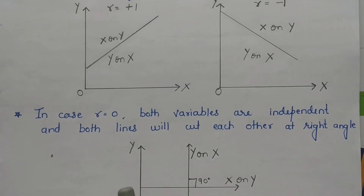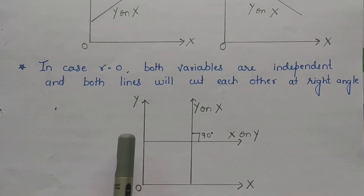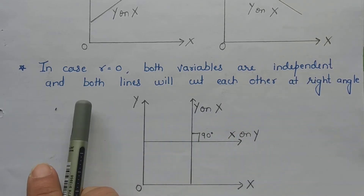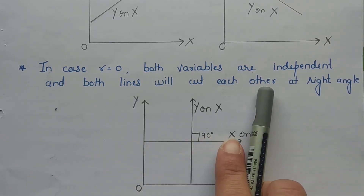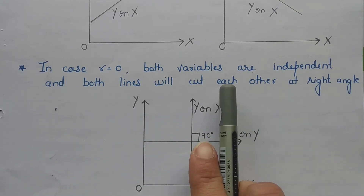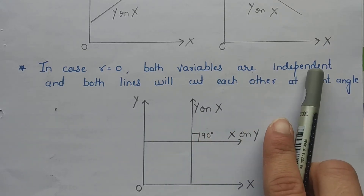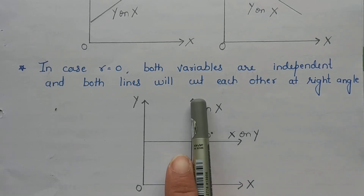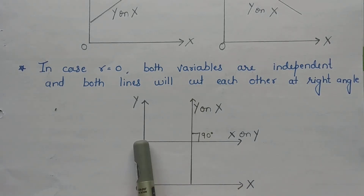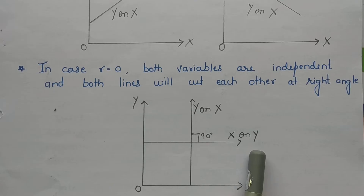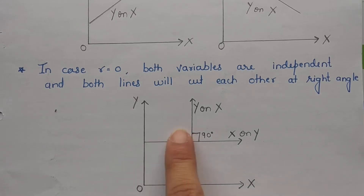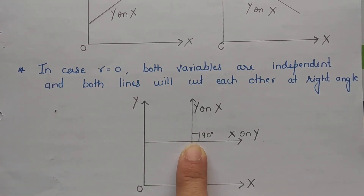Now, if your correlation r is equal to 0, then both variables are independent, and both regression lines will cut each other at a right angle — that is, at 90 degrees. That means this is your y on x, and this is x on y, and since x and y have no correlation, your regression lines will intersect each other at a 90-degree angle.